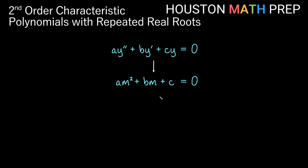We start with a second-order equation ay'' + by' + cy = 0, where a, b, and c are all constants. We analyze this by looking at its characteristic polynomial: am² + bm + c = 0. This is just a quadratic equation that we can solve using algebra.